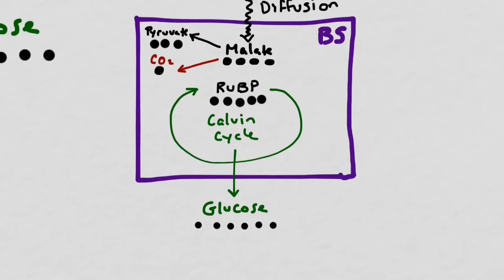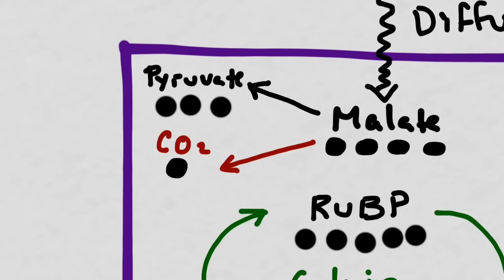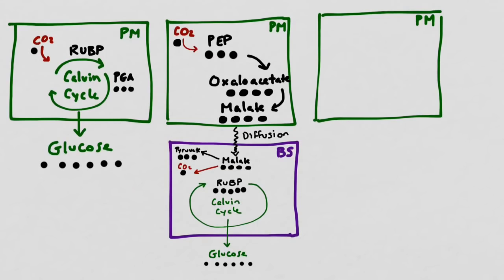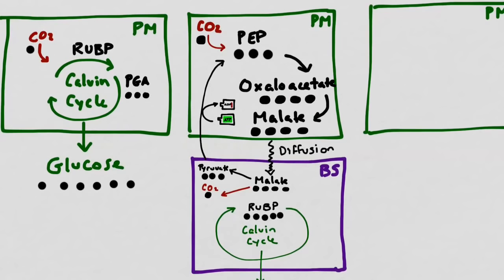Before we move on, we should think about what happens to this molecule of pyruvate. Look back at your diagram and see if you can figure out what other molecule also has three carbons that might enable us to recycle this pyruvate. If you guessed that we might convert pyruvate back into PEP, you would be completely right. This process of reconverting pyruvate back into PEP does require a little bit of ATP though. The pyruvate diffuses back into the palisade mesophyll cell and then becomes PEP again.